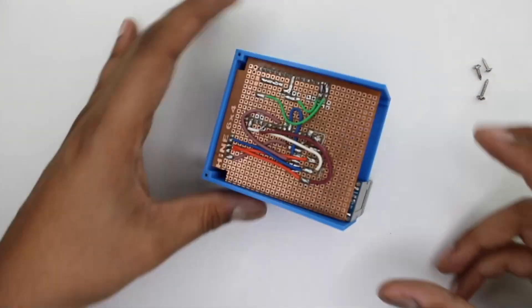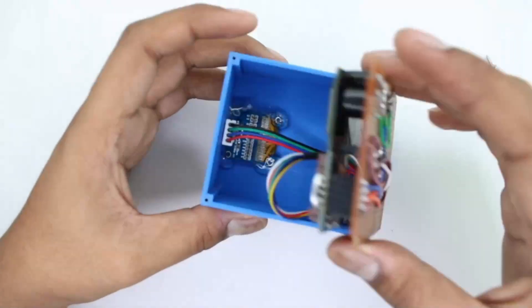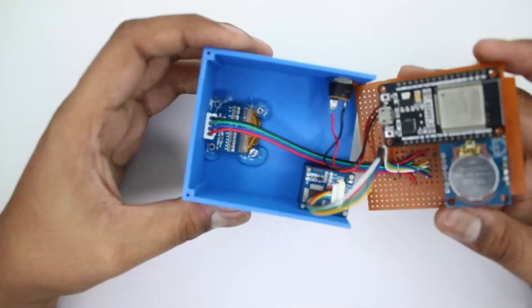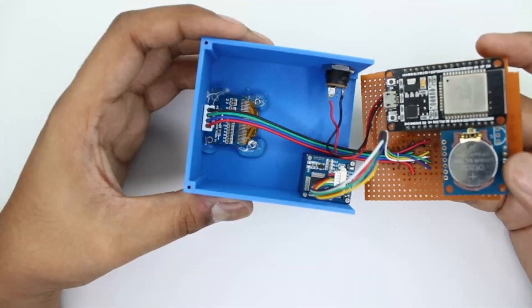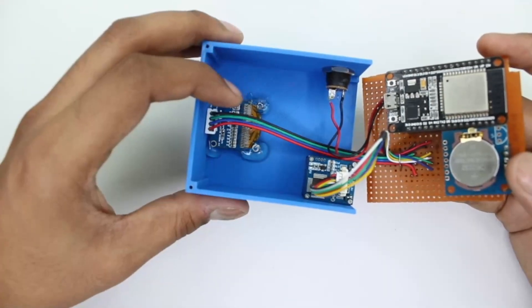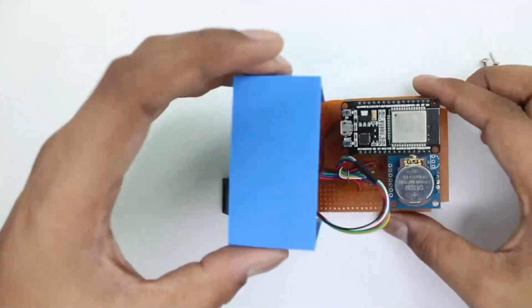Once the back plate is removed you can see that the perf board is there. And if you flip the perf board around you will be able to see the different components inside the project. So here we have an ESP32, a DS1307 RTC, the fingerprint module and the OLED display. So that's all the internals of this project.